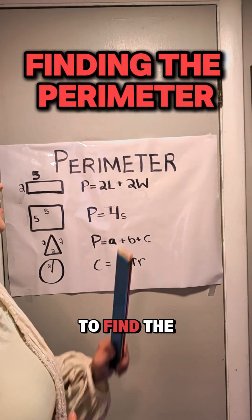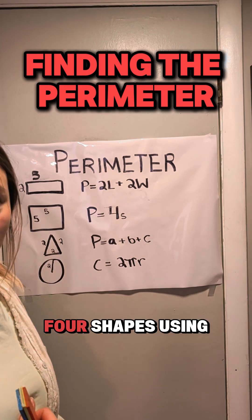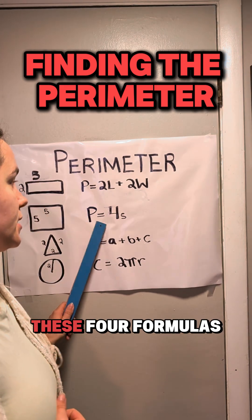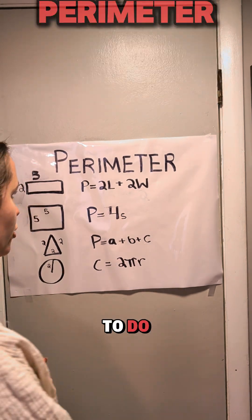Okay, today we are going to find the perimeter of these four shapes using these four formulas. I'm going to walk you through step by step what to do.